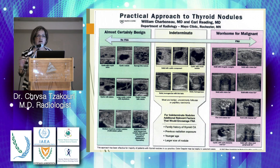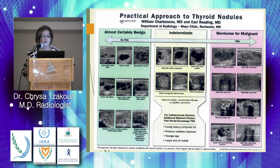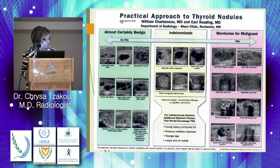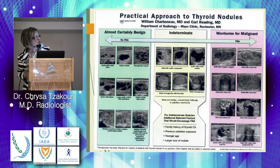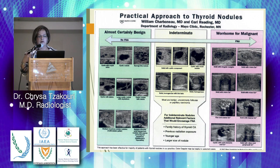All these features are consolidated in practical approaches to thyroid nodules, such as the Mayo Clinic Rochester classification, which stratifies nodules into categories: rather benign, intermediate, and rather malignant — guiding the decision of when to proceed to fine needle aspiration.